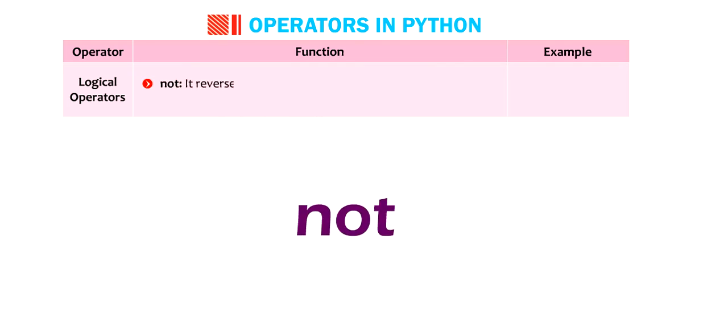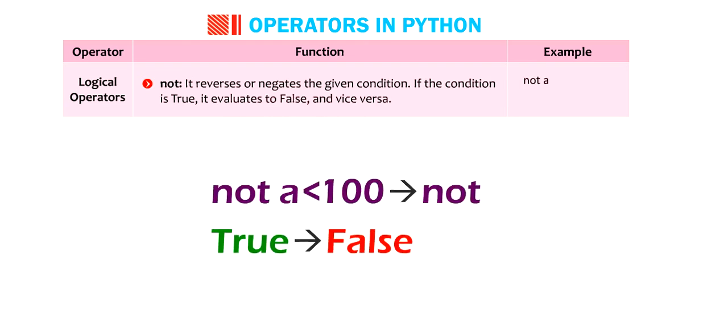Not. It reverses or negates the given condition. If the condition is true, it evaluates to false and vice versa. Not A smaller than 100. Not true. False.